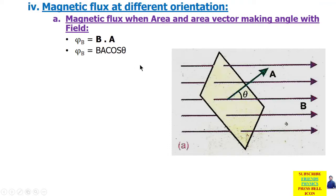अब देखें कि different orientations इस area की आती हैं। अगर यह area मुسलसल अपनी orientation change कर रहा हो तो angle में change आ रहा है। या ऐसा हो कि कोई magnet है उसको बार-बार area के करीब ला रहे हैं या दूर लेकर जा रहे हैं — तो भी change आ रहा है। या इस area का size कम-زیادہ हो रहा हو — تو بھی change آ رہا ہے۔